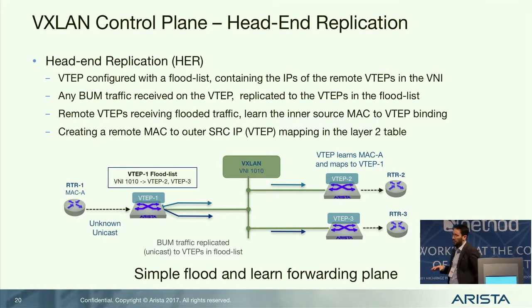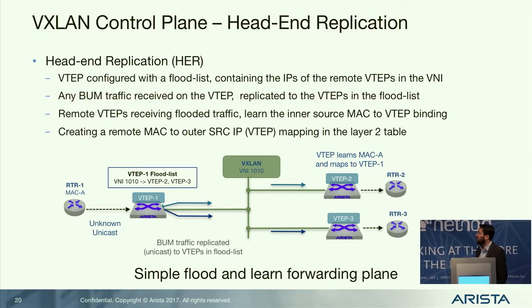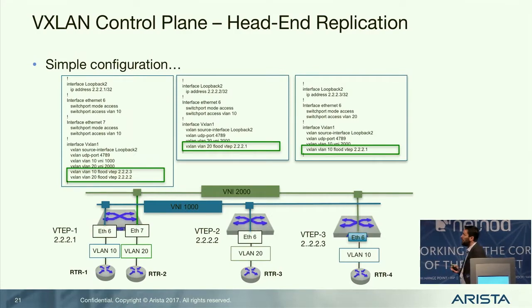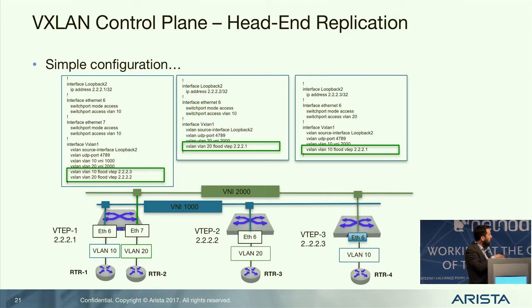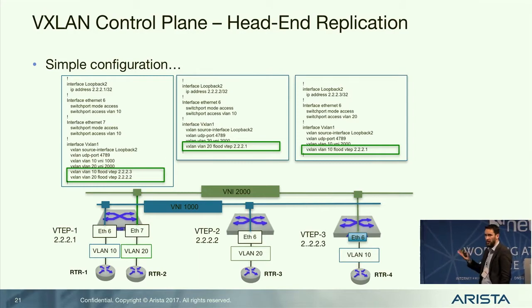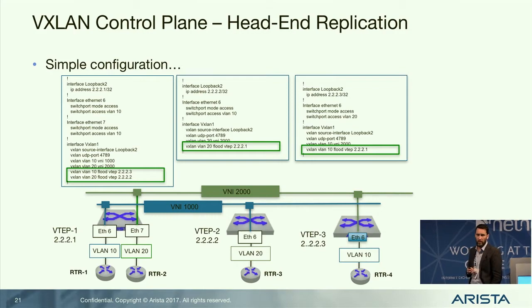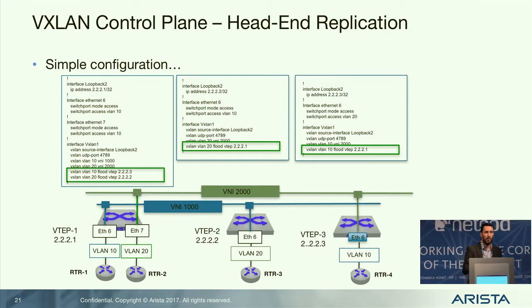With head-end replication there's no multicast needed in the underlay. The config is very light — just a simple couple of lines defining your flood list, either shared across all domains or per VNI. The benefit we're seeing, especially for small to medium-sized IXPs, is they use this approach because there's very little overhead and it's very easy to automate via API calls.